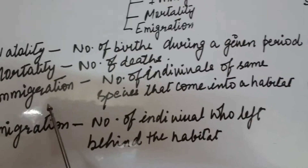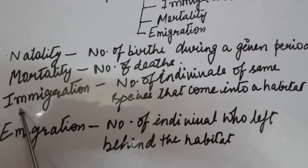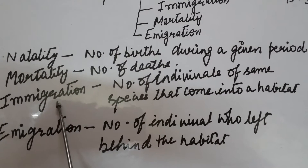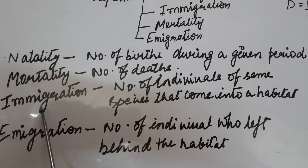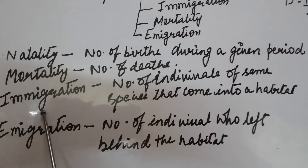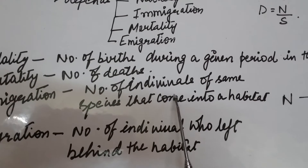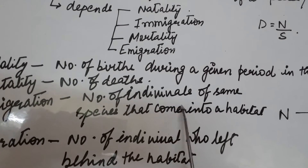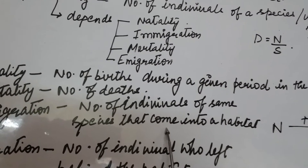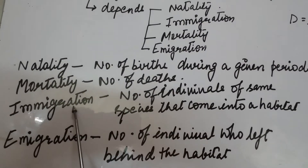Another factor is immigration. Immigration means the migration of individuals from one place into another. When the number of individuals of the same species come into the habitat from elsewhere during any time period, that is called immigration.